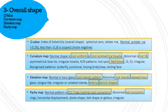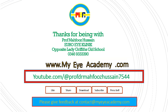Let's recap. First, see the Q value, which gives an idea about the overall shape of the cornea. On the curvature maps, cool uniform and cool symmetrical bow tie are normal, while the rest of the patterns are suggestive of abnormal cornea. On the elevation maps, hourglass appearance or cool eye lens are suggestive of normal cornea, while the rest may suggest abnormality. On the pachymetry maps, CCC rings — central cool concentric rings — are suggestive of normal cornea, while the rest indicate pathology. Thank you very much for being with me, and do subscribe to the channel to see more videos.